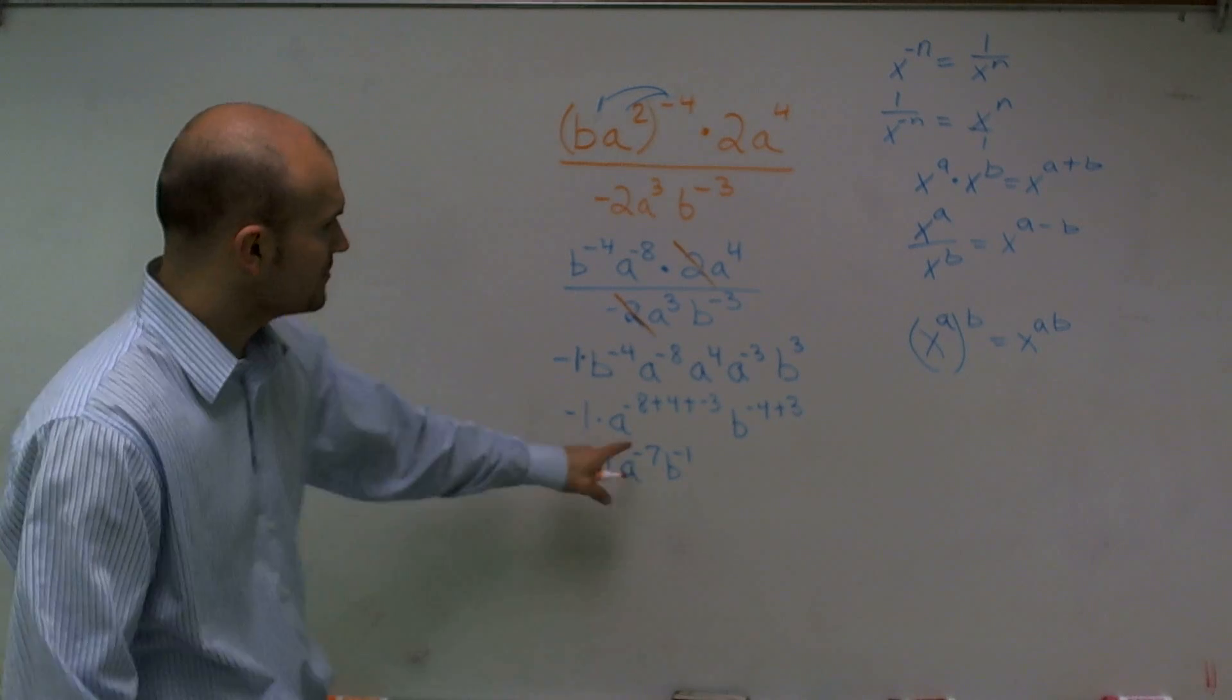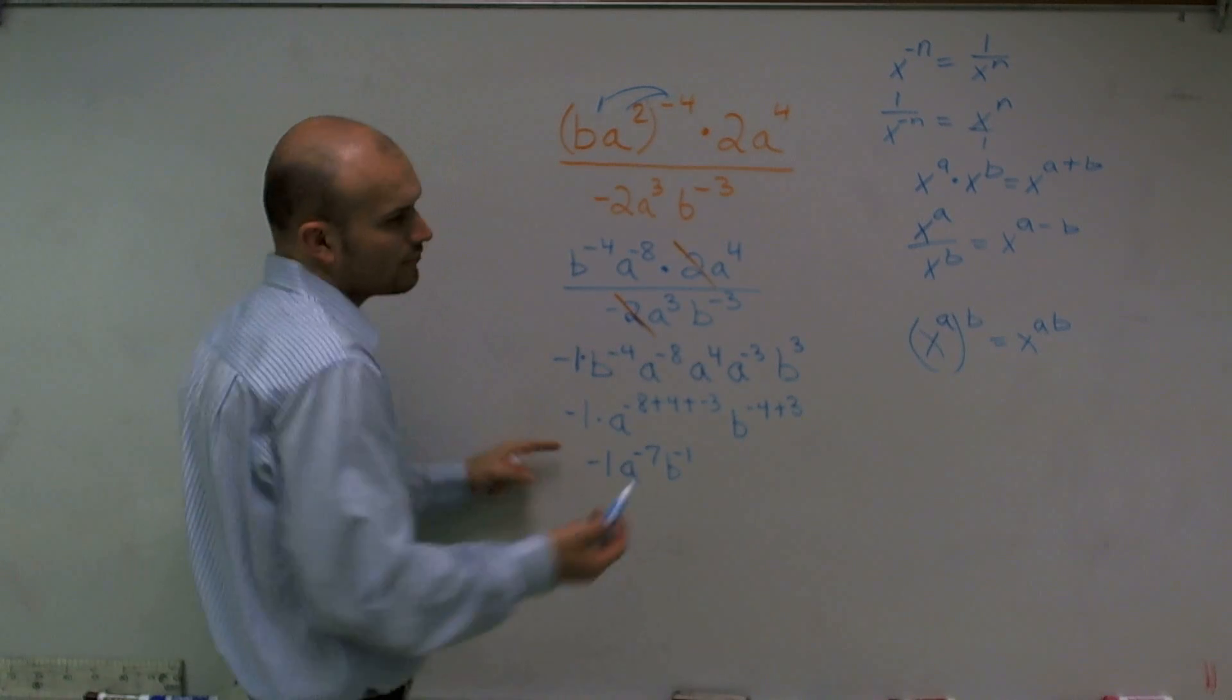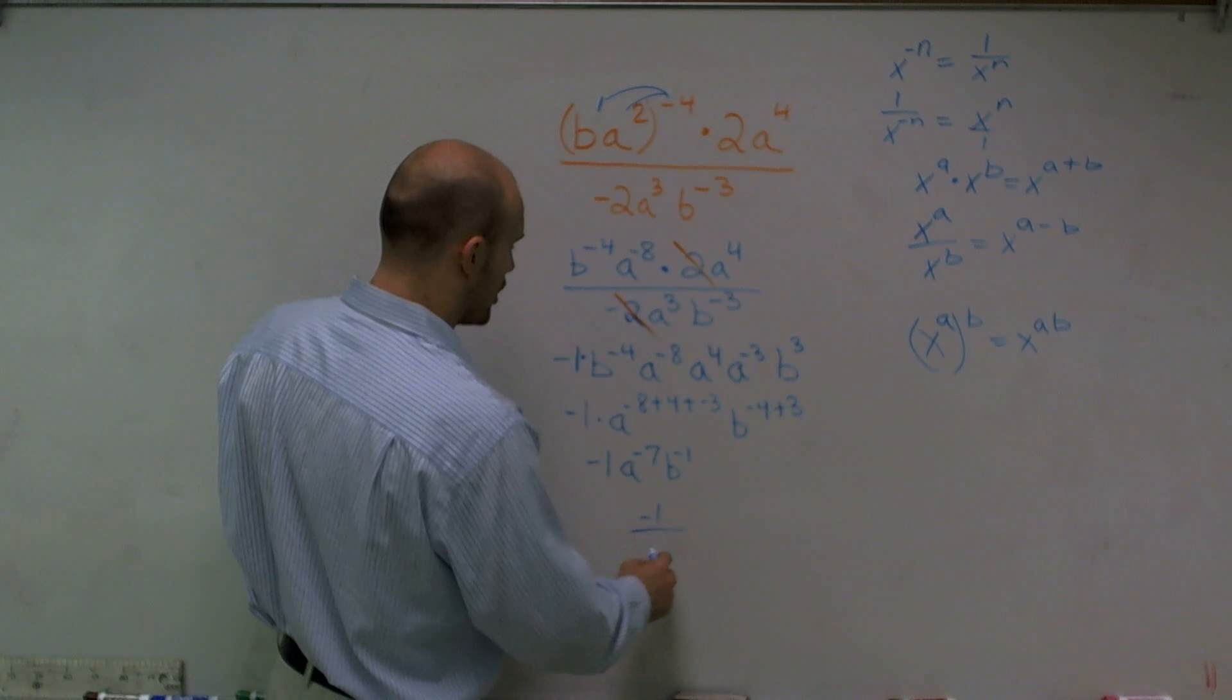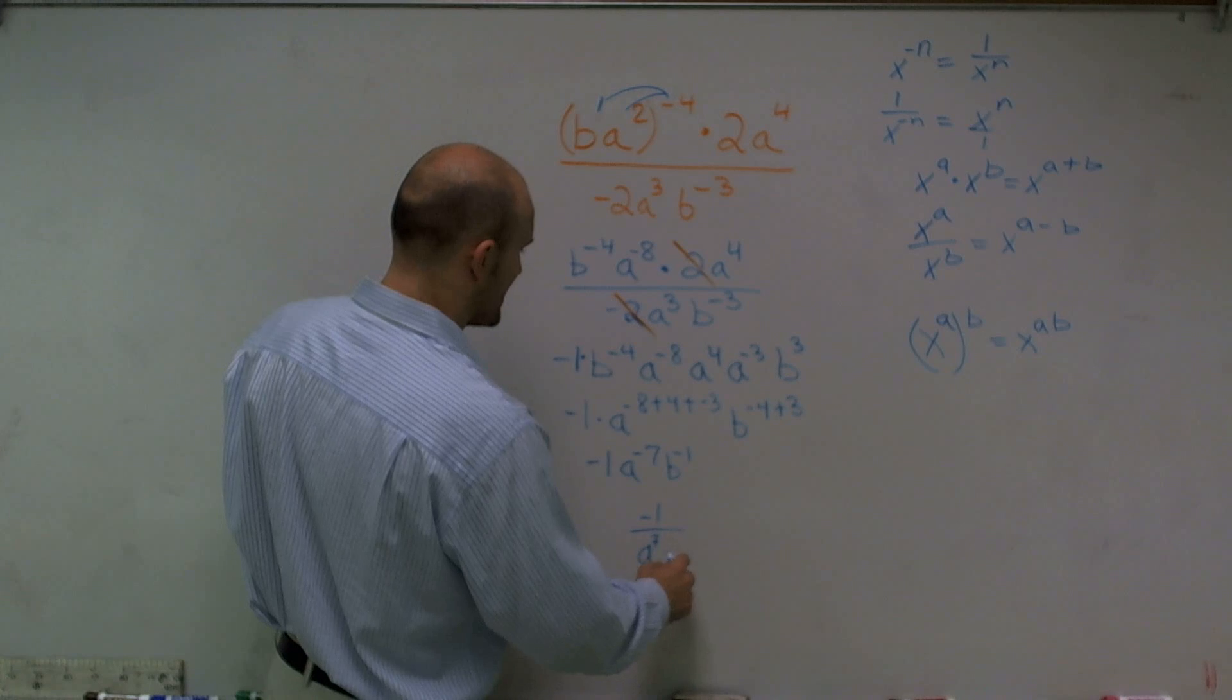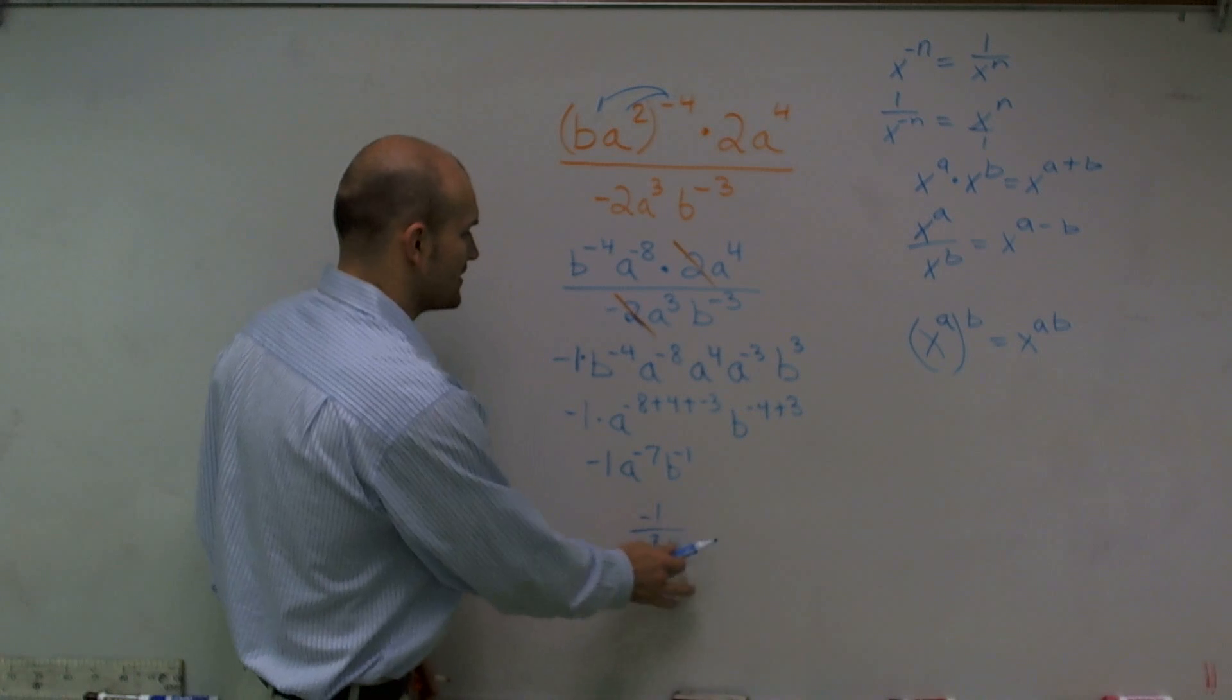Okay? So now, since I know that these two are negative, I have to put them under 1 to make them positive. My negative 1 can remain up top. So my final answer is going to be negative 1 all over a to the positive 7th, b to the positive 1st, which you don't need to write, which you can leave like that.